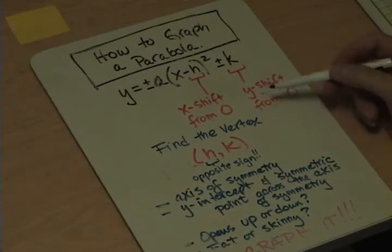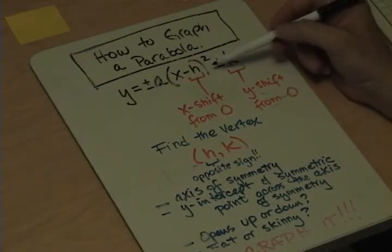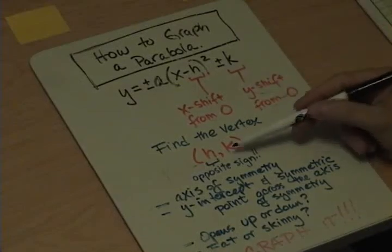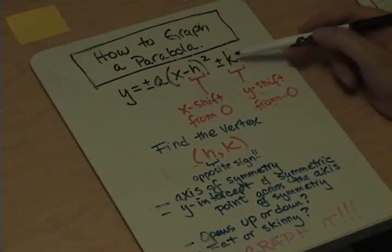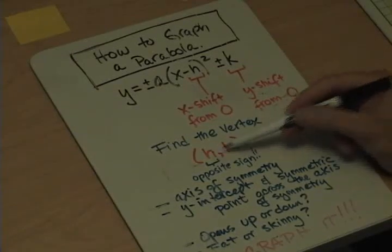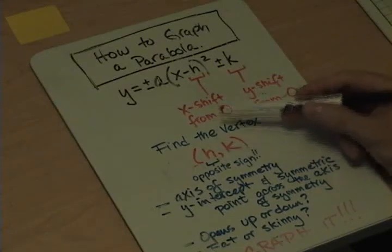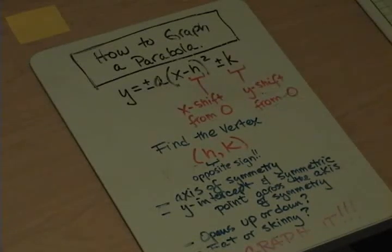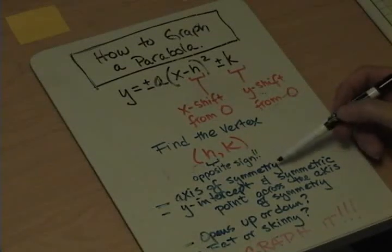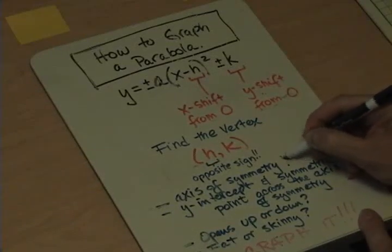So the first step to graph a parabola is to find the vertex. Because this is a negative h, the x value is a positive h, and if it's a positive k then it's going to be a positive y in the (x, y) value. The only one that has the opposite sign is the x value, or the h that you see here. First step: find the vertex, which is an x and a y. Then locate the axis of symmetry, which is simply the x value.